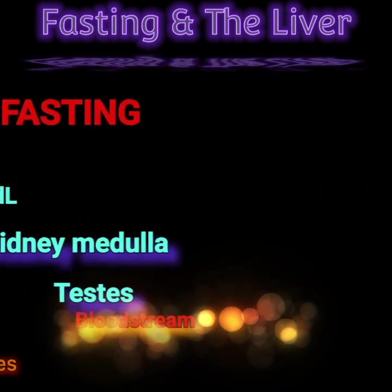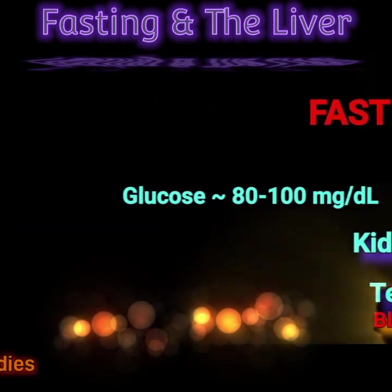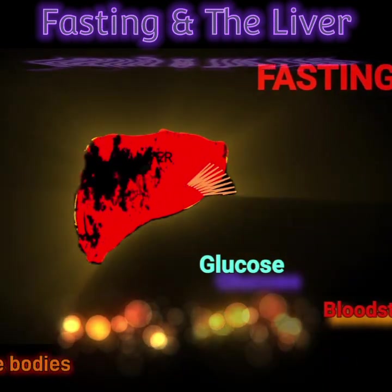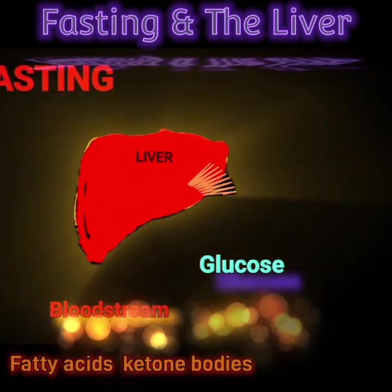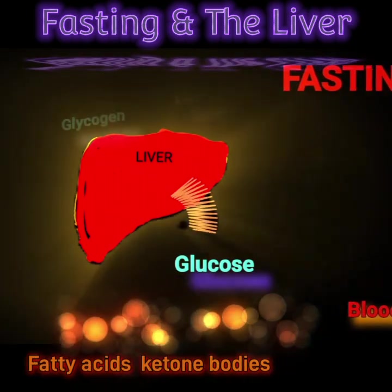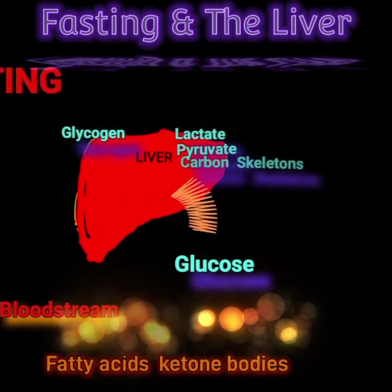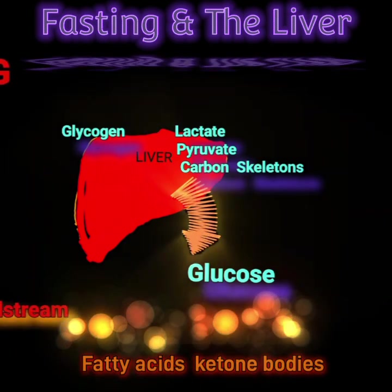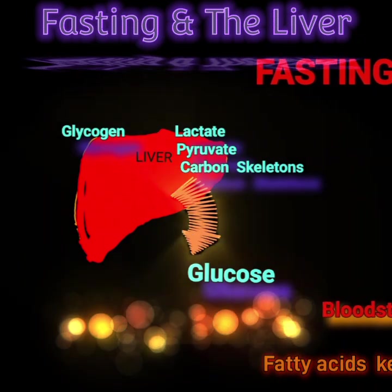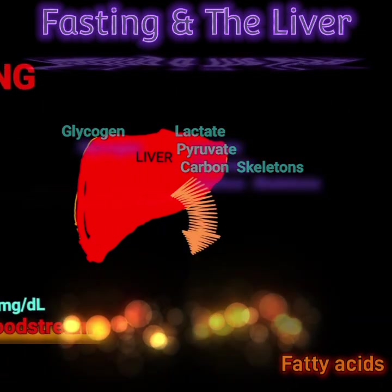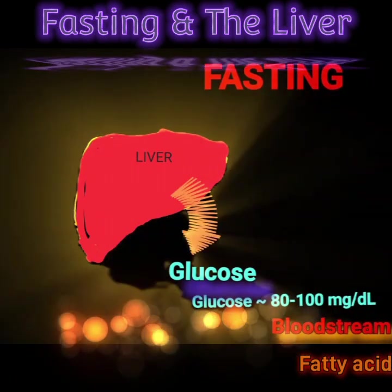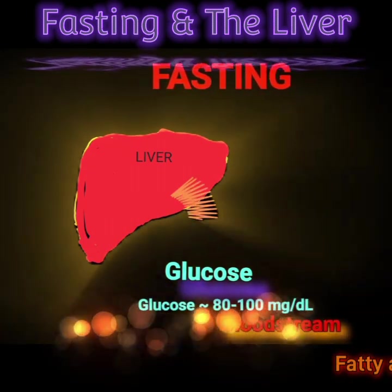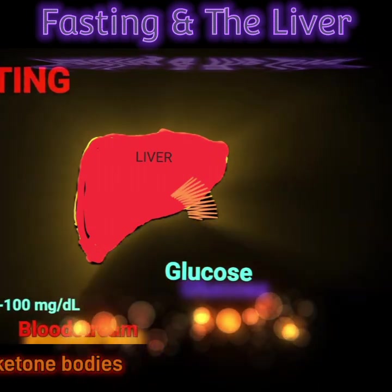Maintenance of blood glucose is entirely dependent on the output of glucose from the liver. The liver is able to produce glucose and restore plasma glucose through two distinct pathways. The first involves the breakdown of stored glycogen to release glucose into the bloodstream, and the second is to synthesize glucose from smaller molecules derived from specific carbon skeletons of amino acids. In both of these processes, the liver is able to resupply the plasma with glucose and maintain glucose levels during fasting between 80 to 100 milligrams per deciliter.